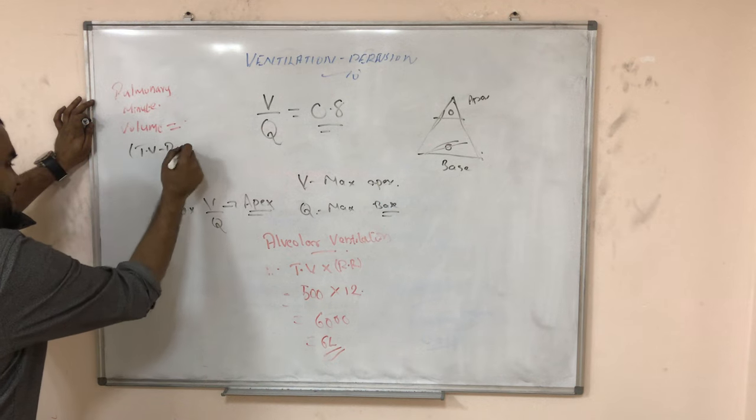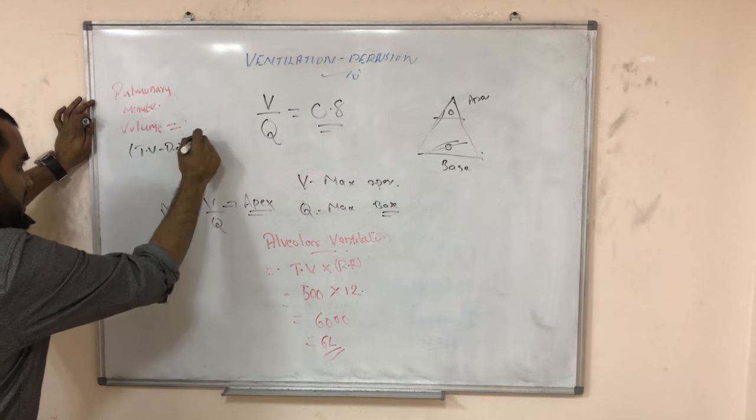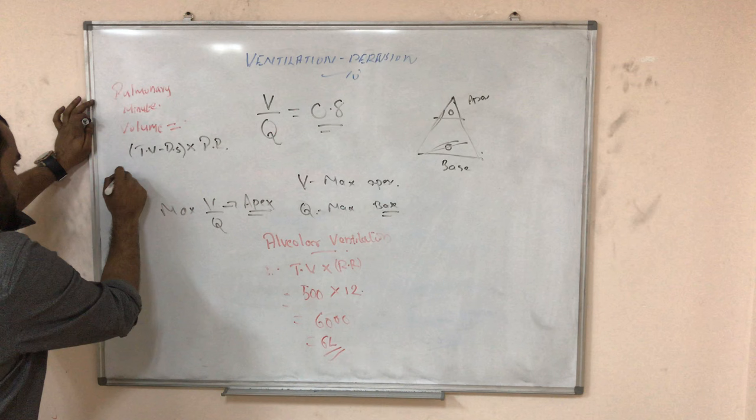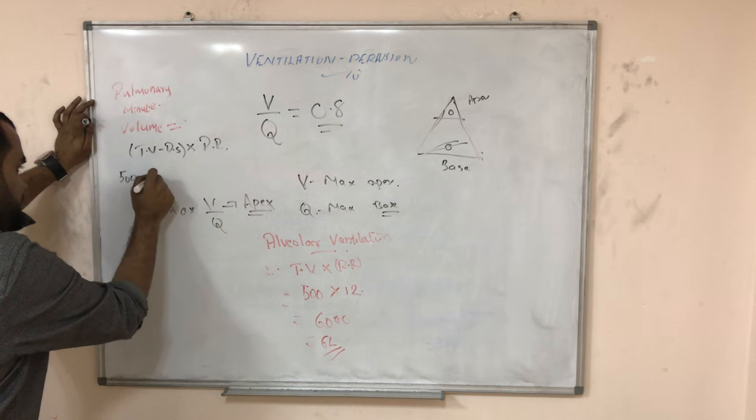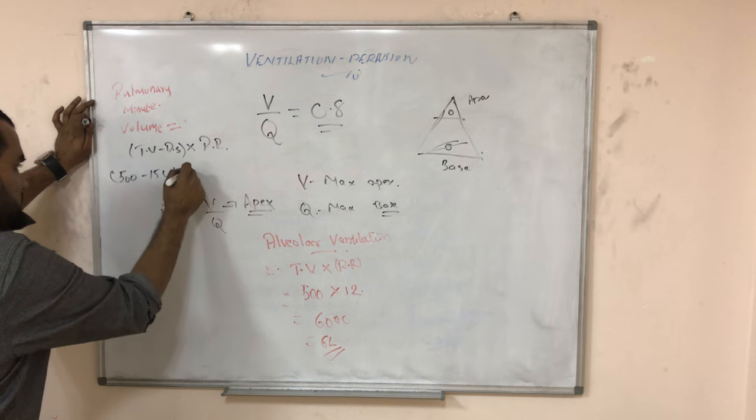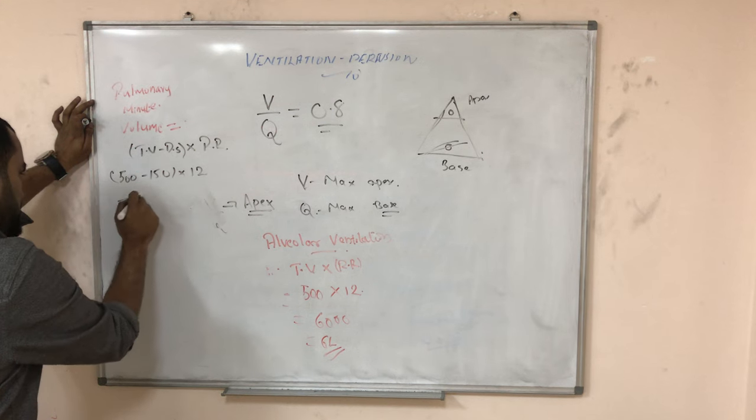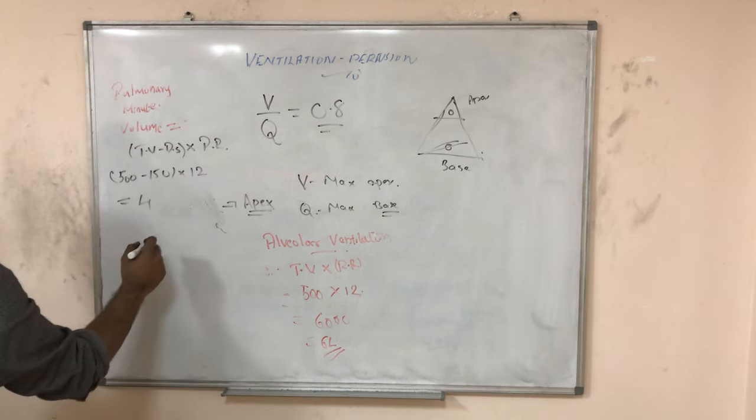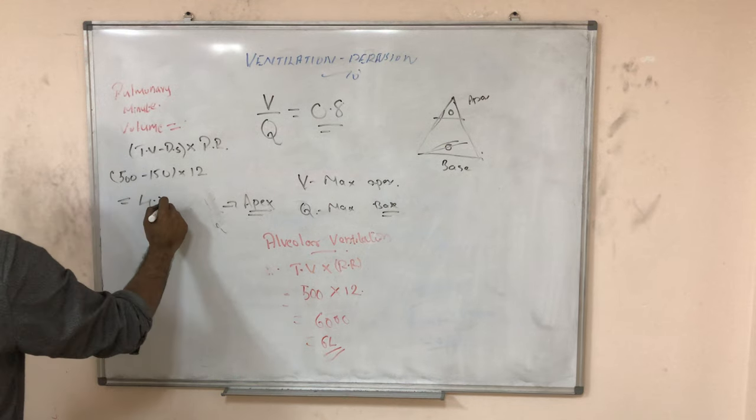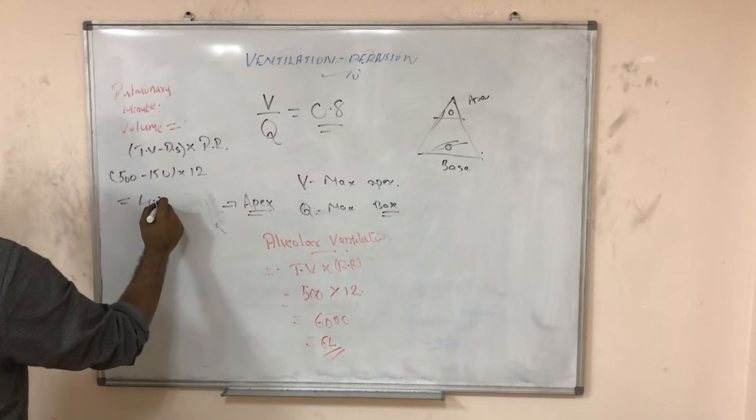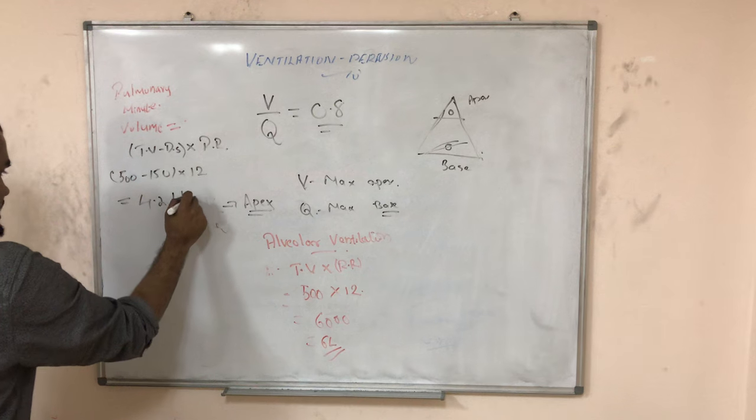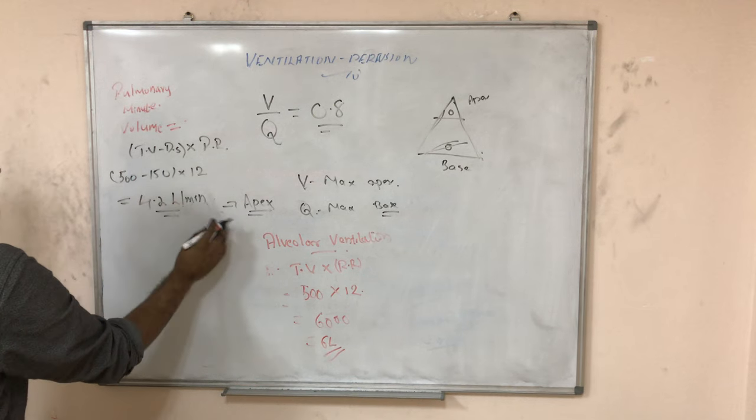TV you already know, 500. Dead space is 150 ml. And RR is, just take 12. So it will be equal to around 4.2 liters, 4.2 liters per minute.